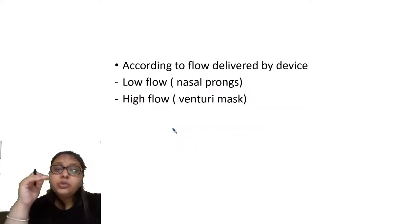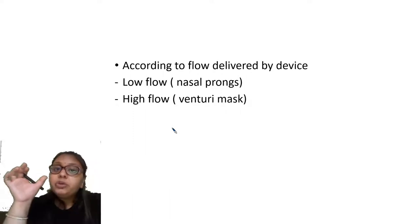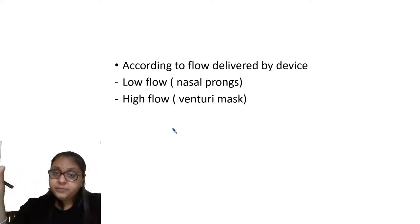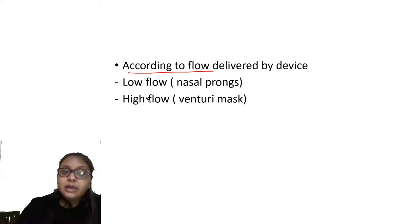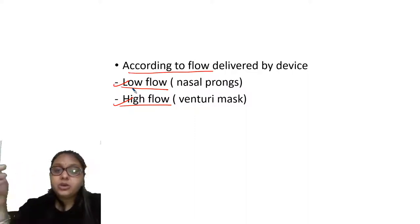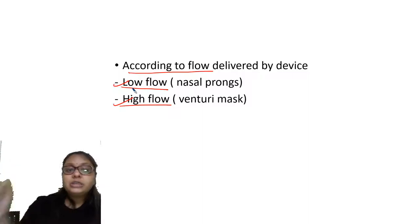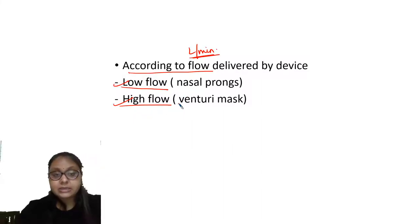According to flow — that is flow of oxygen per minute — devices are divided into low flow and high flow systems. The example of the low flow system is nasal prongs, and the example of the high flow system is the venturi mask. So based on how much oxygen in liters per minute is supplied, we classify these devices.